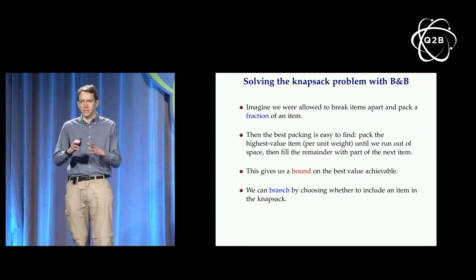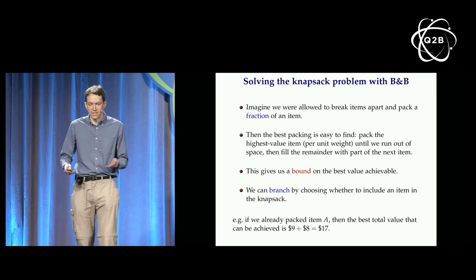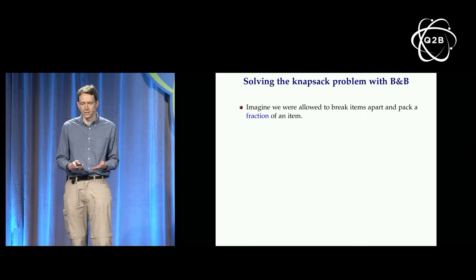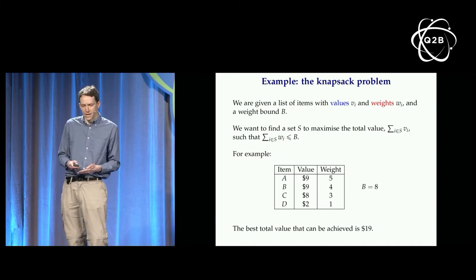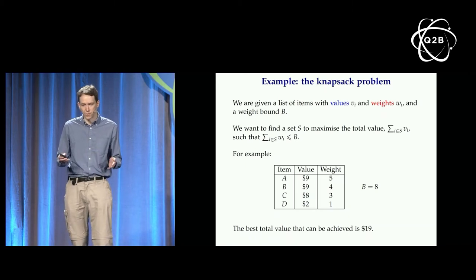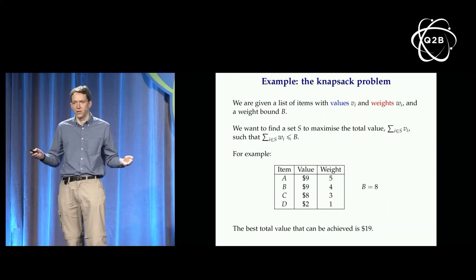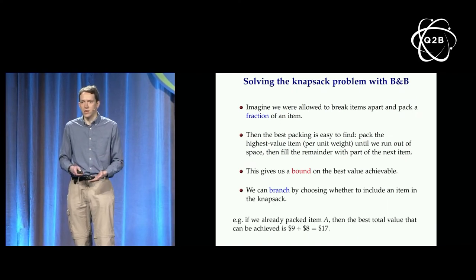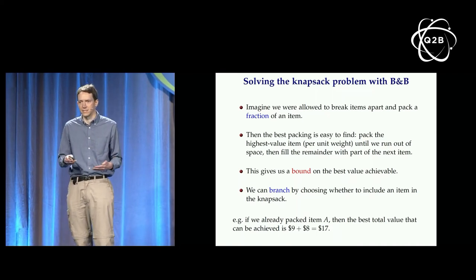We can explore the effect of both options. For example, if we include item A, we can compute how well we can do with the fractional packing problem given that item A is included — giving a bound on how well we can solve the normal problem with any solution involving item A. If we had already packed item A, it uses weight five, leaving only three, and the best we can achieve after that is to pack item C, giving value 17 with a full bag. So no solution including item A achieves a value better than 17.